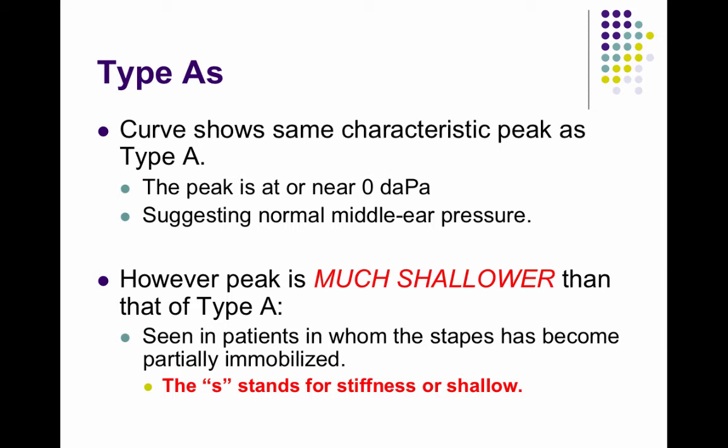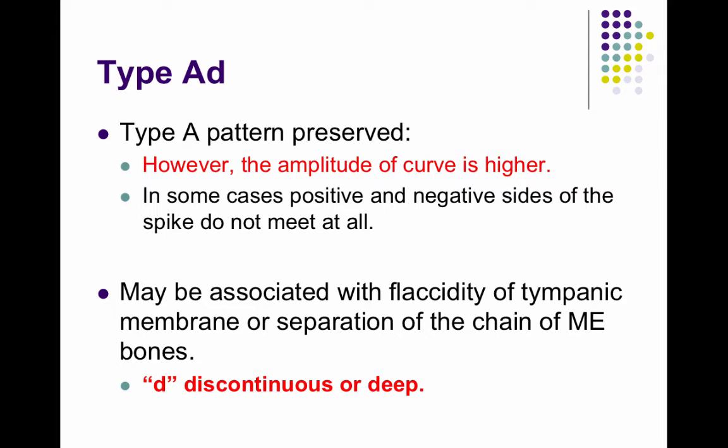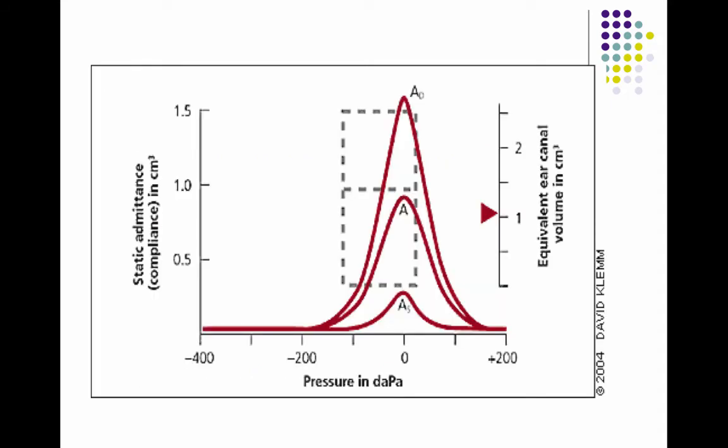An AS is similar to a type A but shallower — think A, shallow. The peak is not as high as with a normal type A. This is seen in patients who have a stiffer middle ear, such as fluid in their middle ear. AD is a type A but with a very large peak — think disarticulate. This is for people who might have ossicular discontinuity or broken middle ear bones, where the tympanic membrane is just moving too much, resulting in too flaccid movement.